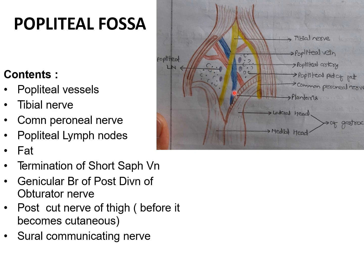These contents are exposed when the boundaries of the fossa are separated. When you separate the two heads of the gastrocnemius muscle, you can see all the contents: popliteal vessels, tibial nerve, common peroneal nerve, popliteal lymph nodes and pad of fat, termination of short saphenous vein, genicular branch of the posterior division of the obturator nerve, posterior cutaneous nerve of thigh, and sural communicating nerve. These contents are very important — you have to memorize them.